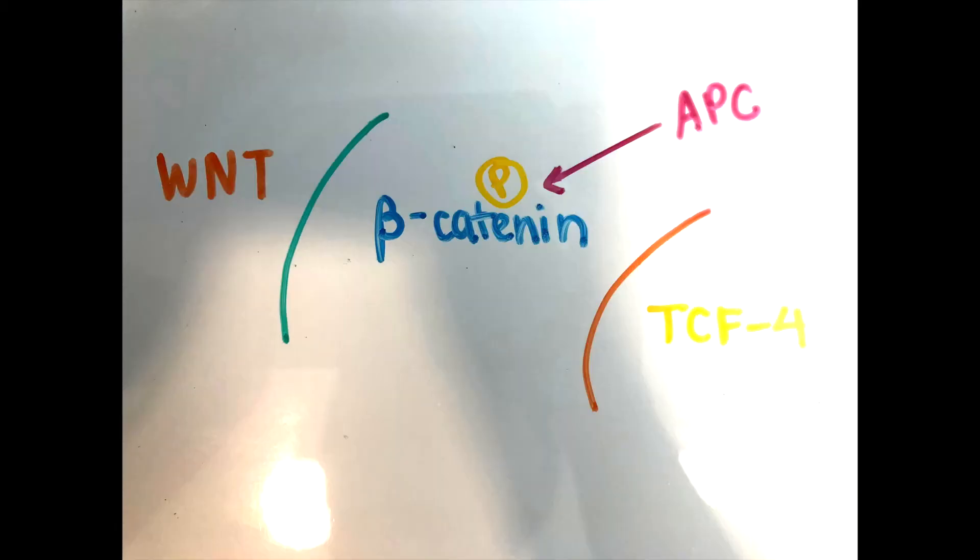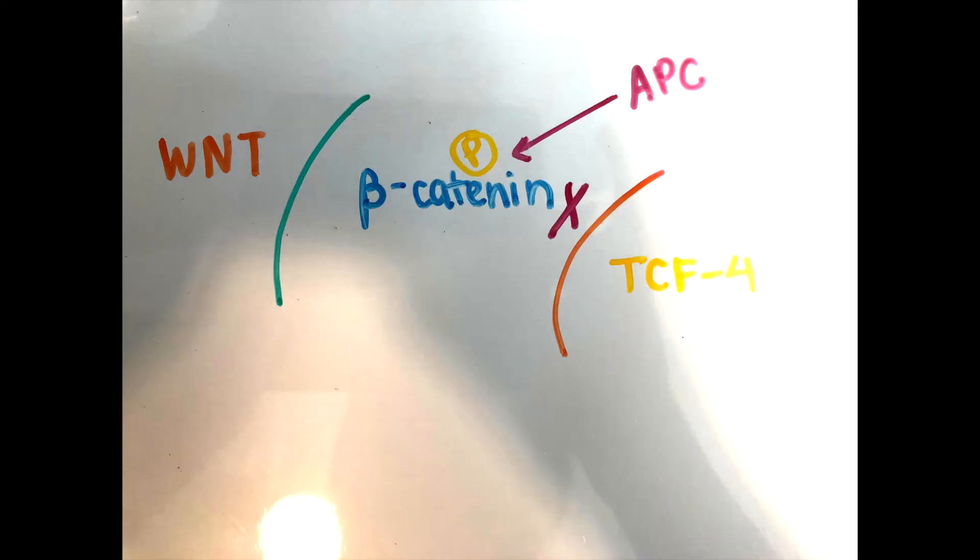Here's a way to remember this. APC is like the mother to beta-catenin. APC puts a phosphate sticker, kind of like a paperweight, on beta-catenin and says, Girl, stay at home. Don't get into any trouble. If your boyfriend WNT knocks on your window, don't open it. Don't go travel to your crazy friend TCF-4. We don't want no cancer here. So that's kind of what APC does.